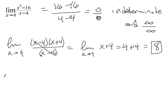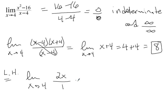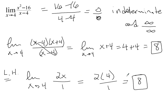The other option is to use L'Hôpital's rule, and whenever you use L'Hôpital's rule on the AP test, you need to make sure that you indicate that you're using it. Then take the derivative of the numerator — derivative of x squared minus 16 is 2x — and the derivative of x minus 4 is 1. Plug in x equals 4 to get 2 times 4 over 1, or 8. Either way, you'll end up with the same answer. You can use L'Hôpital's rule any time you have an indeterminate limit of 0 over 0, or infinity over infinity.